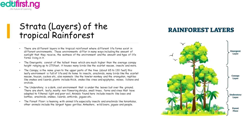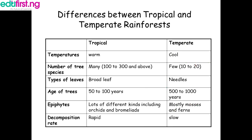Differences between tropical and temperate rainforests: Temperature — tropical: warm; temperate: cool. Number of tree species — tropical: many (hundreds, 300 and above); temperate: few (10 to 20). Types of leaves — tropical: broadleaf; temperate: needles. Age of trees — tropical: 50 to 100 years; temperate: 500 to 1000 years. Epiphytes — tropical: many kinds including orchids and bromeliads; temperate: mostly mosses and ferns. Decomposition rates — tropical: rapid; temperate: slow.